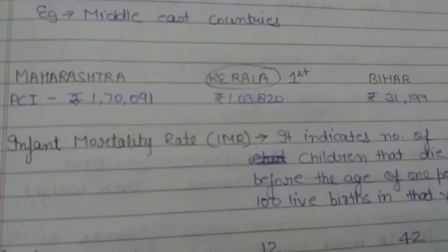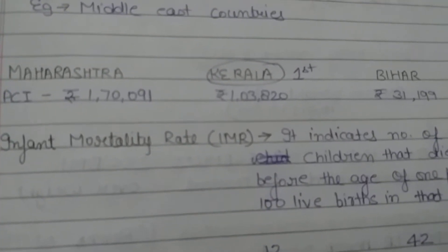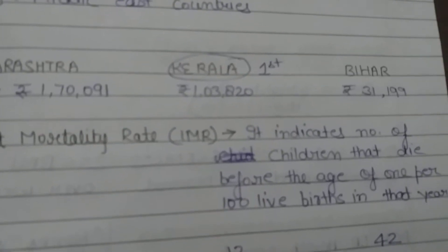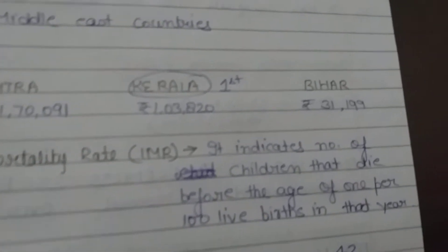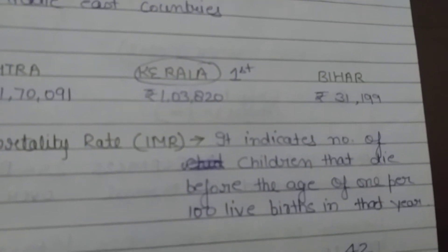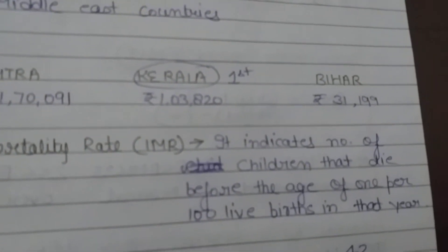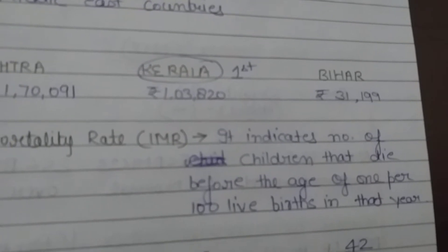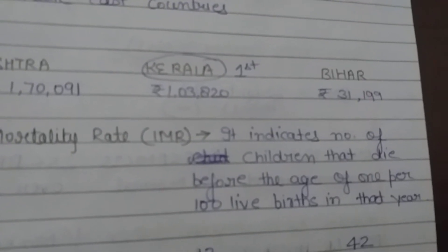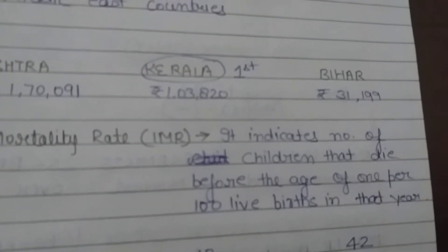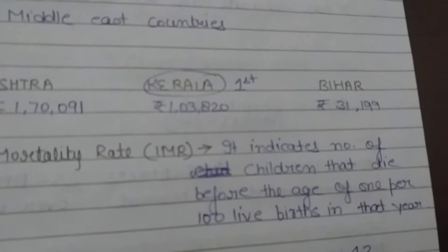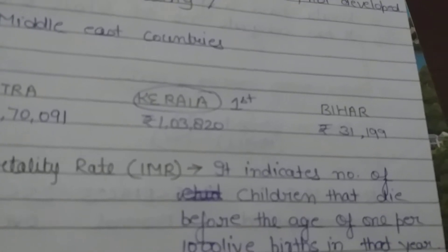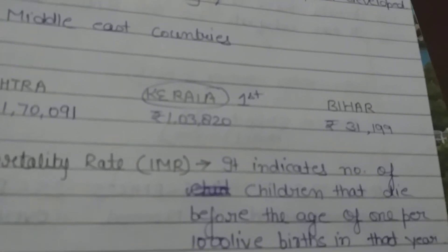Next is Infant Mortality Rate, IMR. It indicates the number of children that die before the age of 1 year per 1,000 live births in that year.